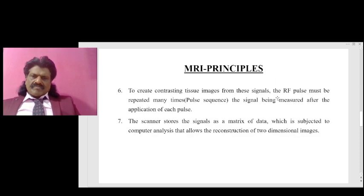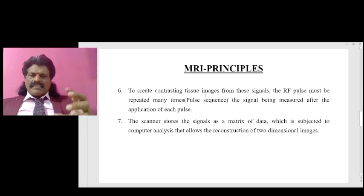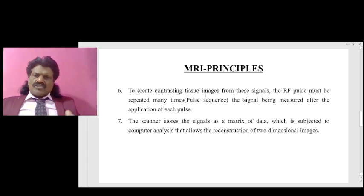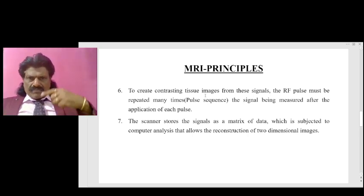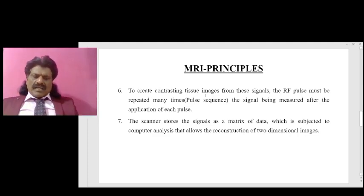We then apply an RF radiation pulse. To create contrasting tissue images from these signals, the RF pulse must be repeated many times — this is known as a pulse sequence — with the signal being measured after the application of each pulse. The scanner stores the signal as a matrix of data, which is subjected to computer analysis to allow the reconstruction of two-dimensional images.